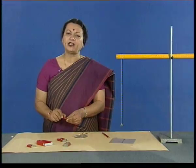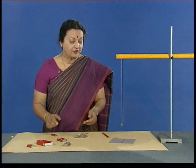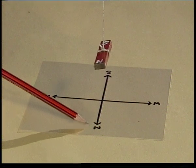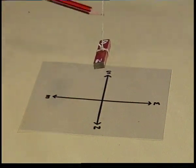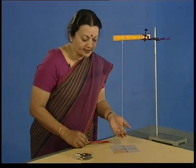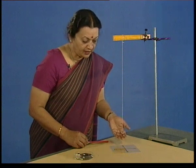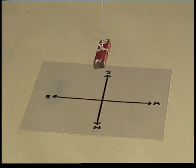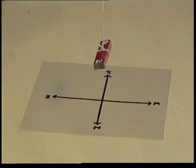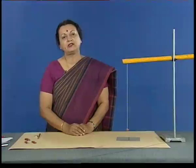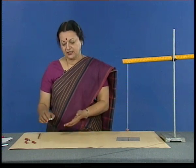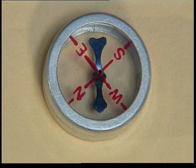a north pole and a south pole. But have you ever wondered why they are called so? If we freely suspend a magnet, the pole that points towards the north is called the north pole and the one that points towards the south is called the south pole. This property was used by travelers since the olden days to locate direction. A compass needle, which is a freely suspended magnet, was used by them.